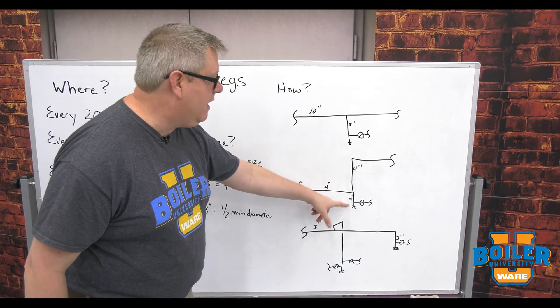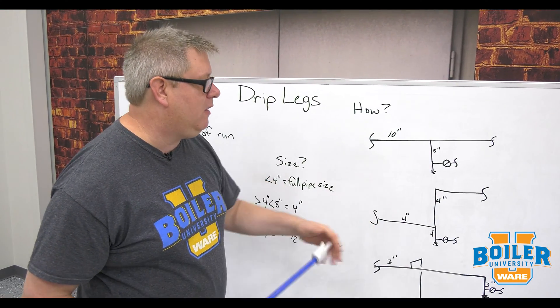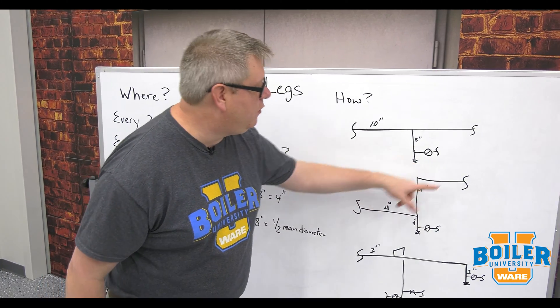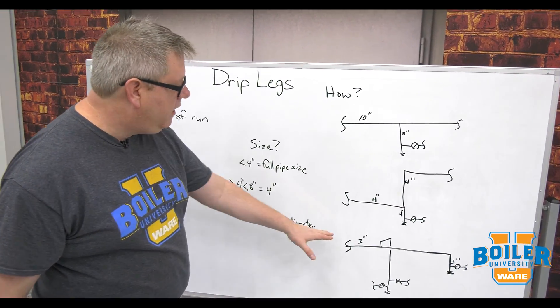We come down, and once again out sideways to the trap with the drain line. Because this main's a 4-inch, it's going to continue in 4-inch, and my drip leg is going to be 4-inch in this instance.